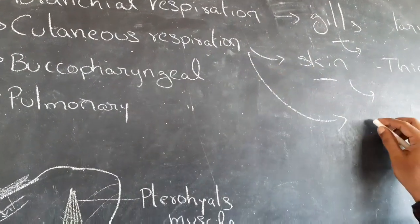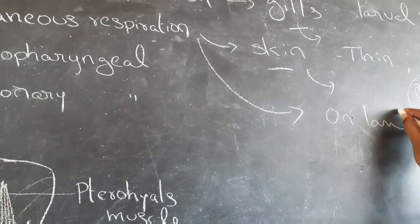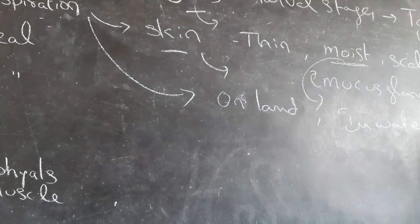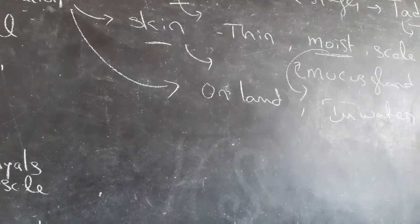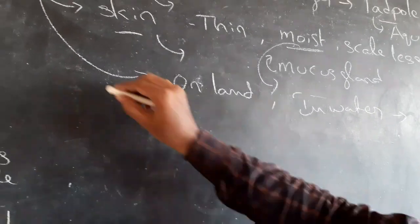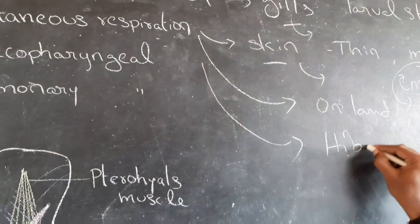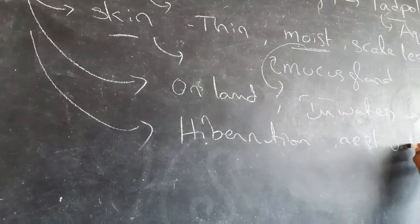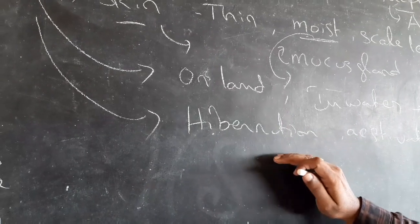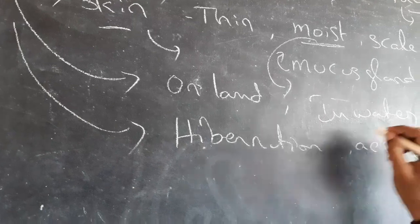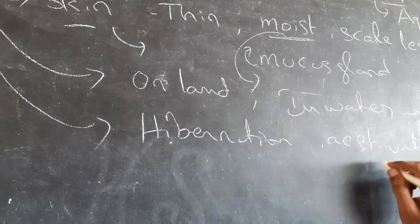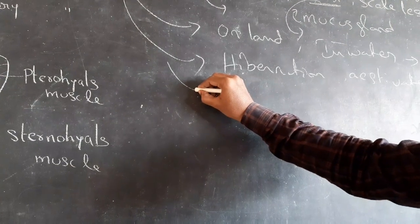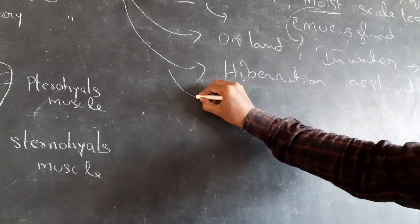When the frog lives on land, in water, and during hibernation and estivation, gases exchange through the skin. Dissolved oxygen in the water is exchanged through the skin by diffusion.